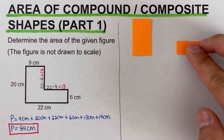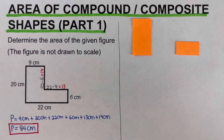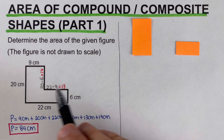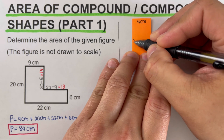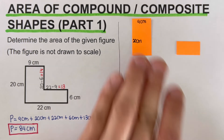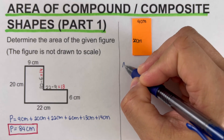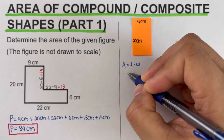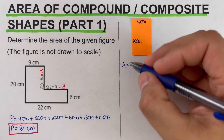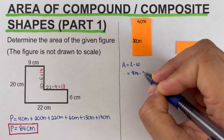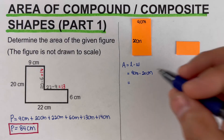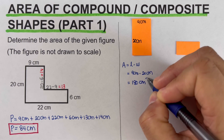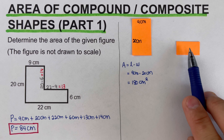I broke it into two pieces and we label the parts. Starting with the top piece: this side is 9 centimeters and this side is 20 centimeters. The formula for area is length times width, so we multiply 9 centimeters times 20 centimeters. 9 times 20 gives us 180 centimeters squared.